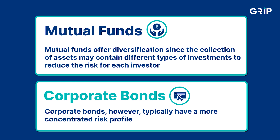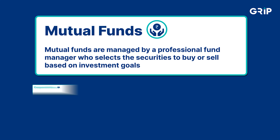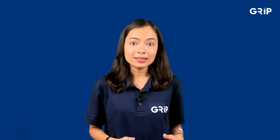Number four, management: mutual funds are managed by a professional fund manager who selects the securities to buy or sell based on investment goals. Corporate bonds, on the other hand, have a fixed maturity date and coupon rate.